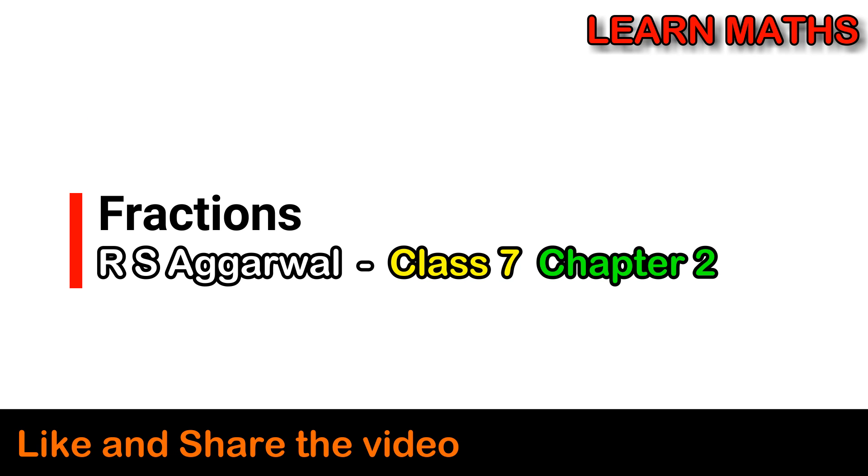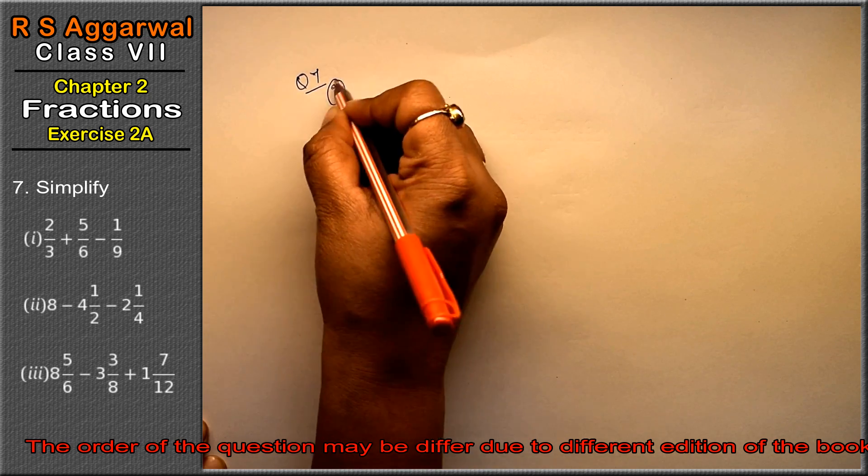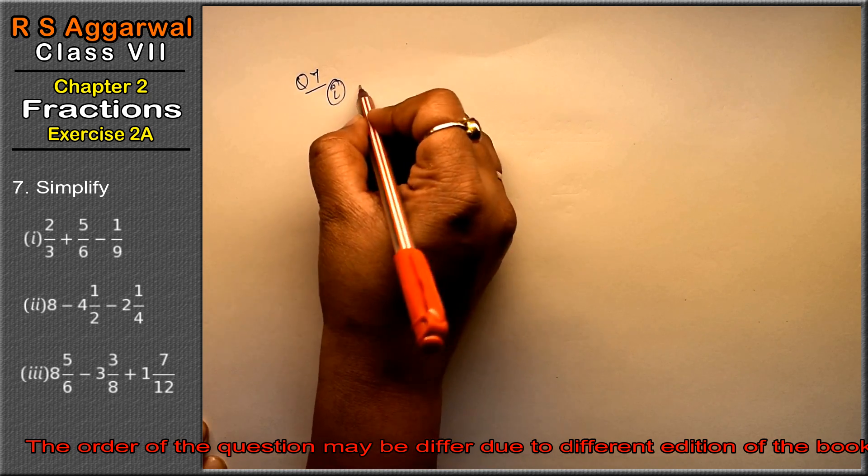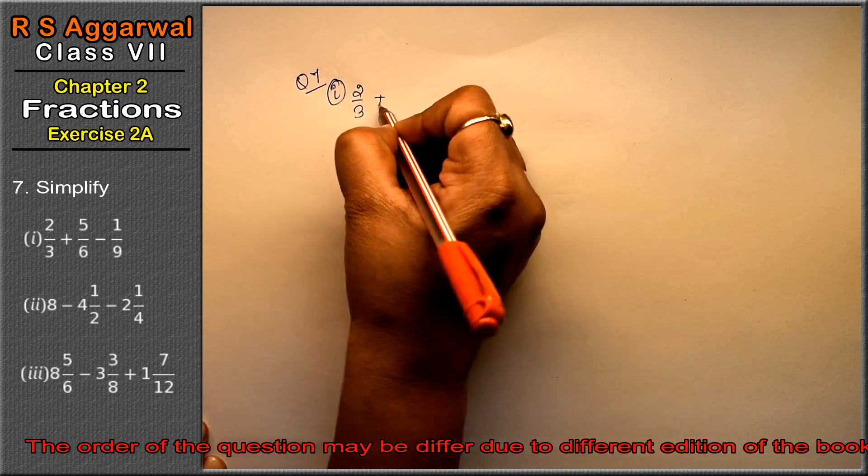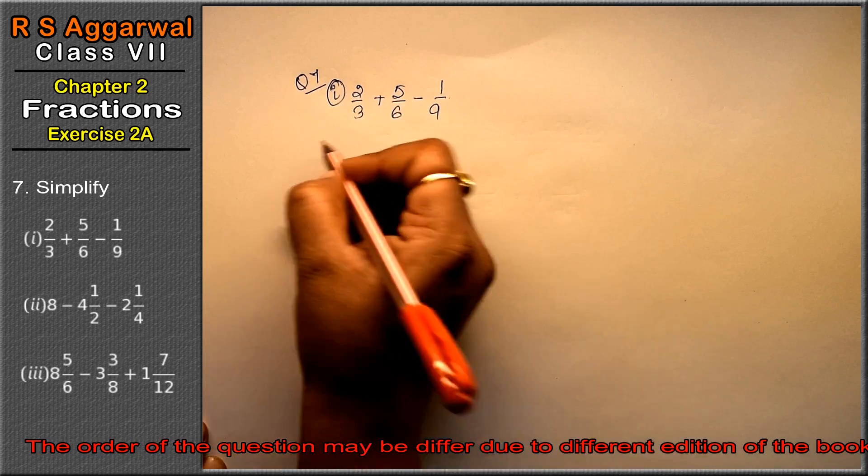Let's do question number 7 of exercise 2A, that is fractions. Question number 7, first part. First part is simplify 2 upon 3 plus 5 upon 6 minus 1 upon 9.